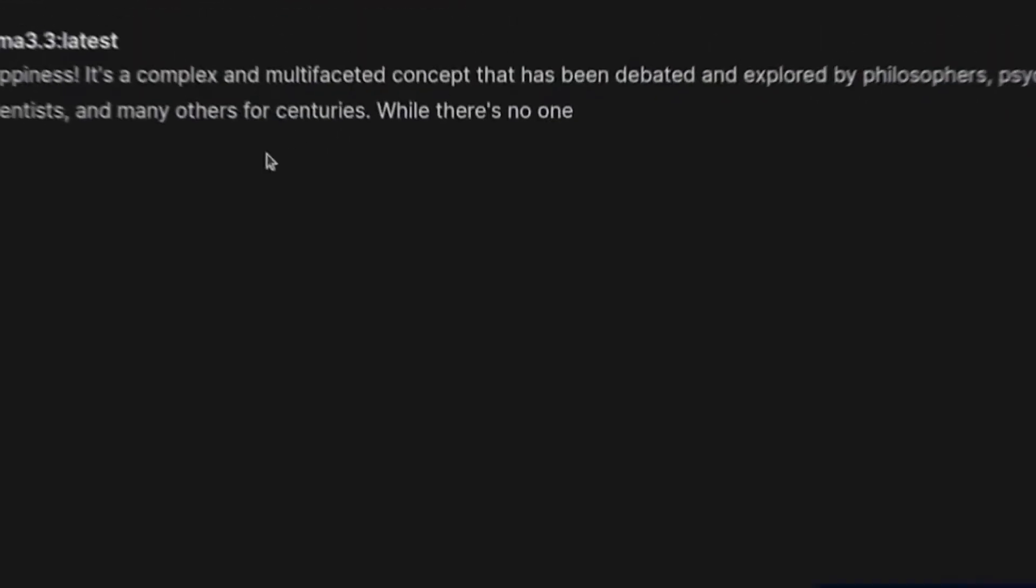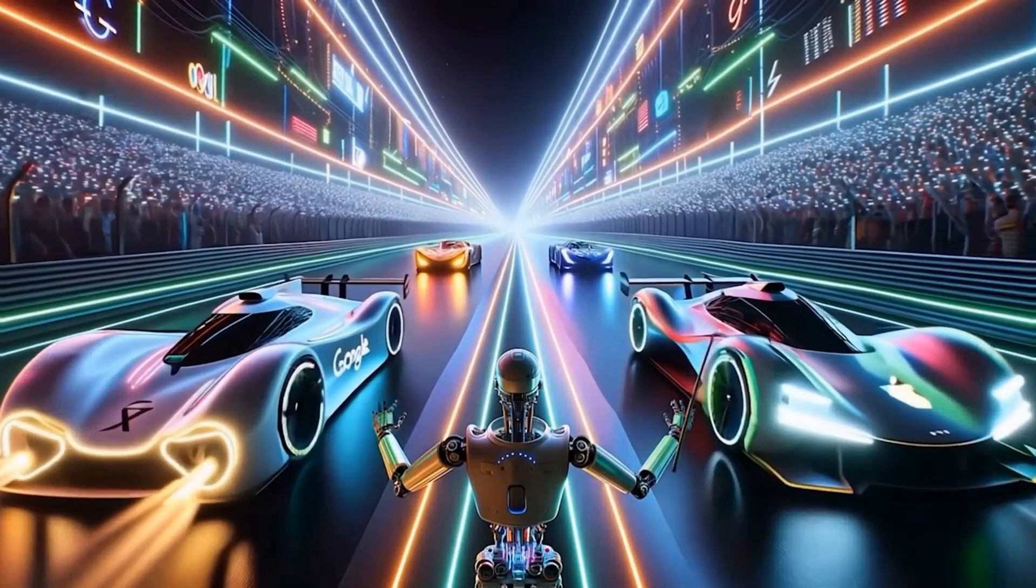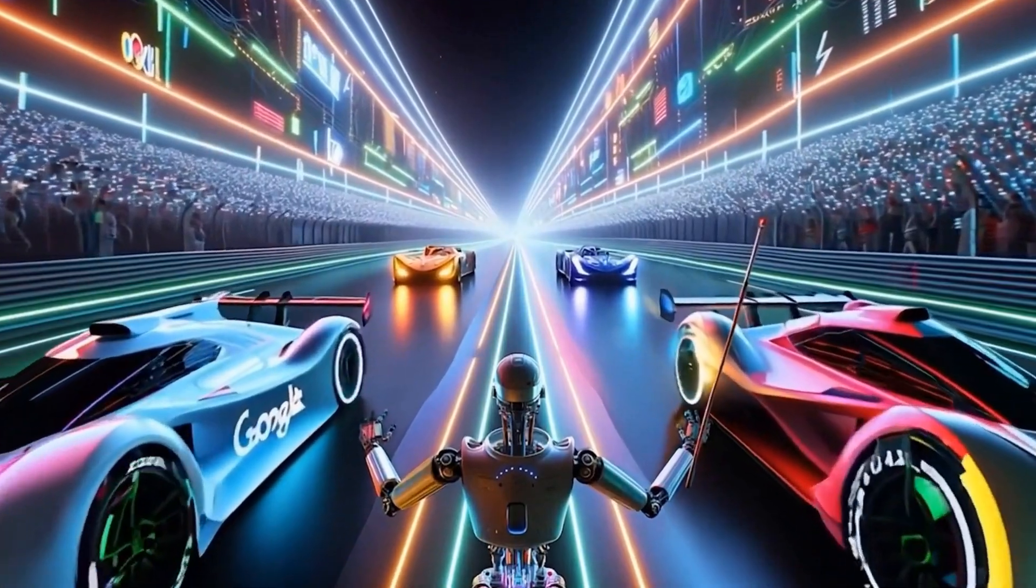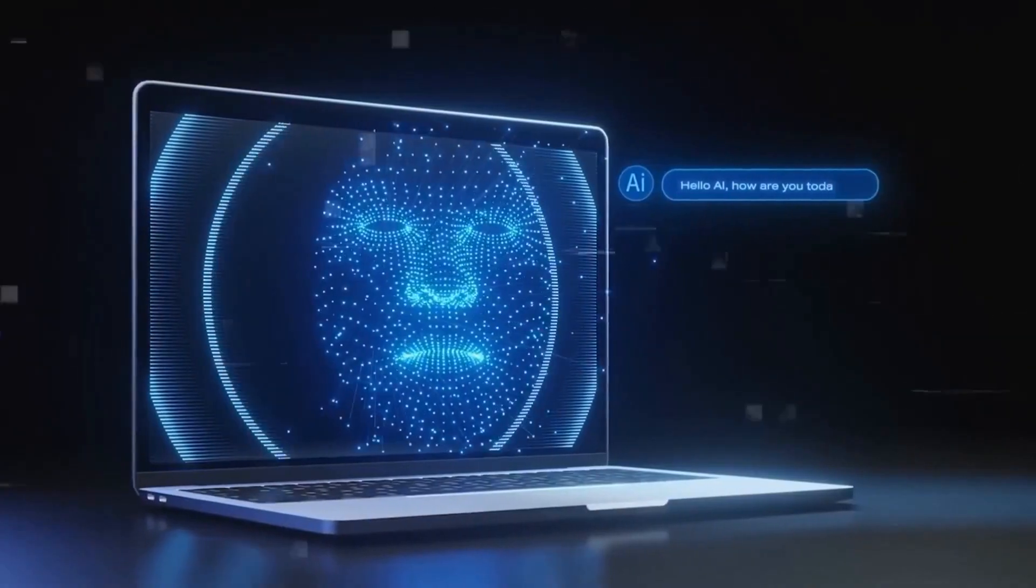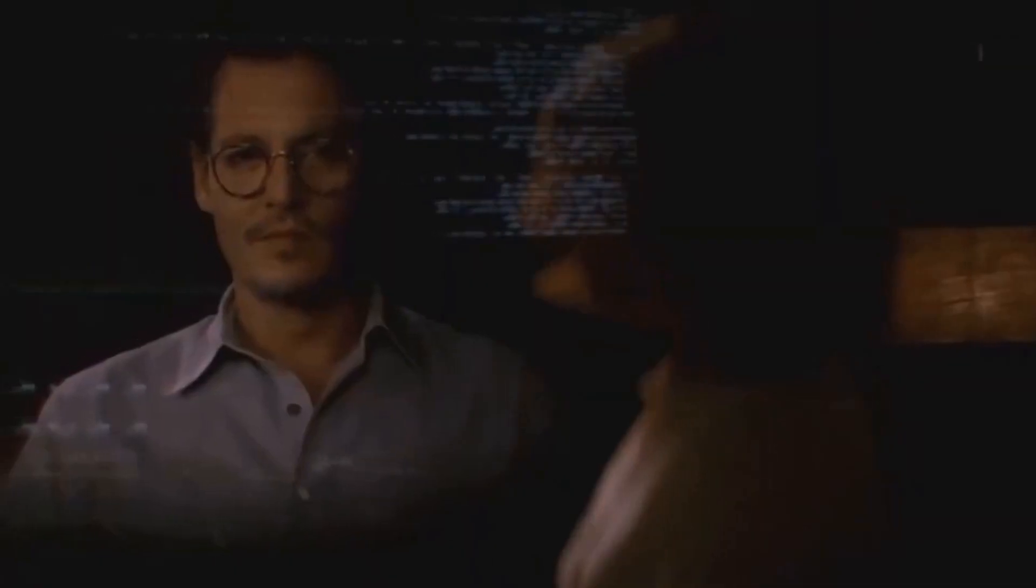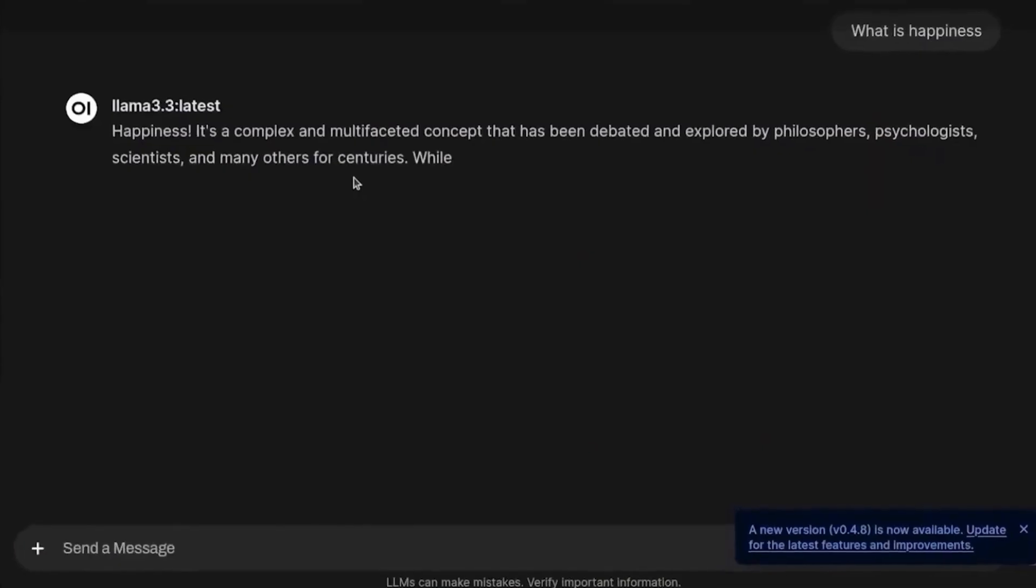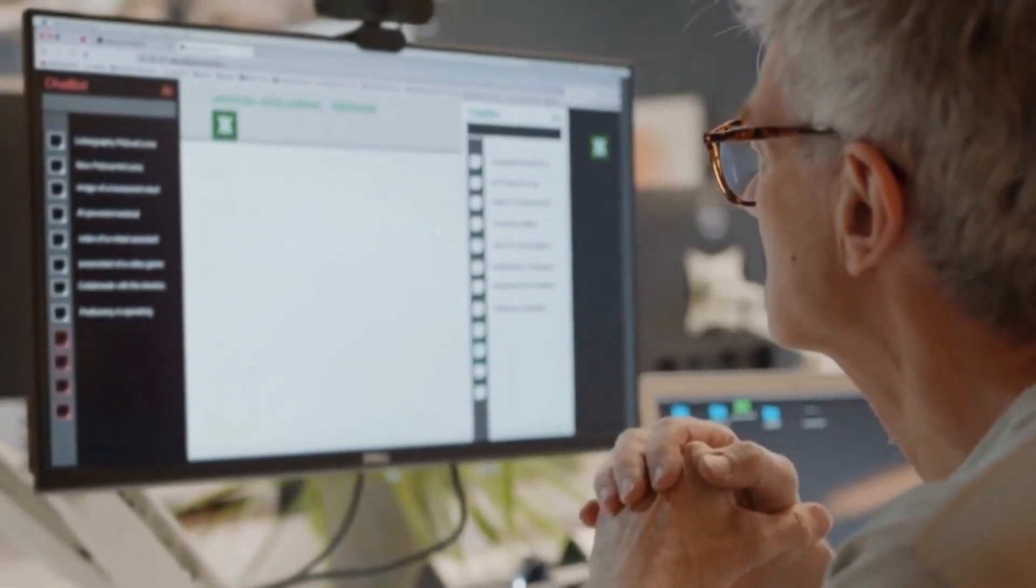Meta just launched LAMA 3.3 and brought some impressive surprises. Imagine an AI model that uses only a fraction of the resources of its predecessor, but delivers almost the same performance. This is what we're talking about. Lower cost, less demand for GPUs, and a huge potential to transform everything from everyday tools to immersive virtual reality worlds. And there's more. I'm going to be amazed at what this new version can do. It's a step forward that could completely change the game in the tech world.